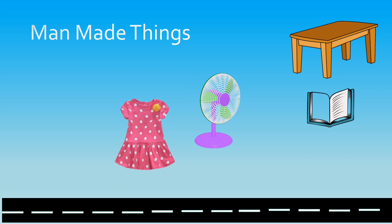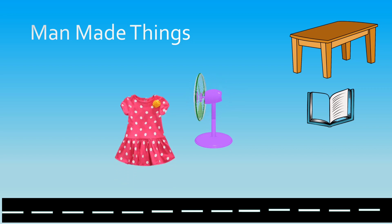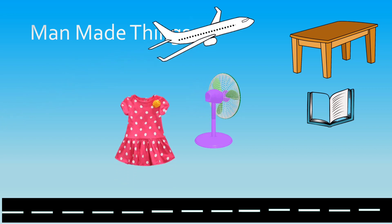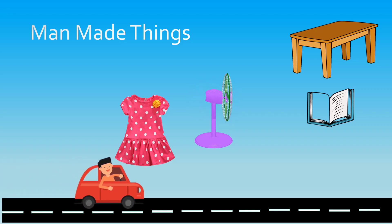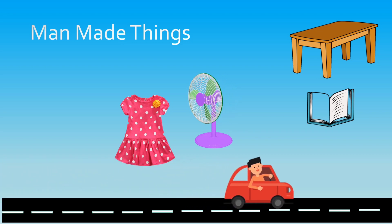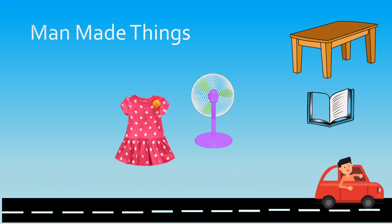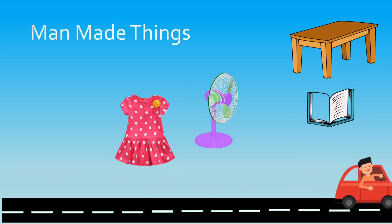Man-made things are made using natural things. Something which is created by a person and does not occur naturally in the environment is called a man-made thing. Let us see a few examples to understand it better.